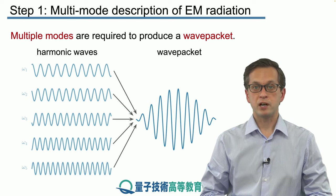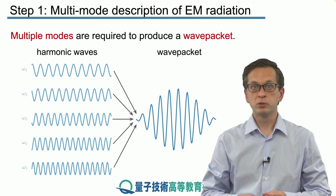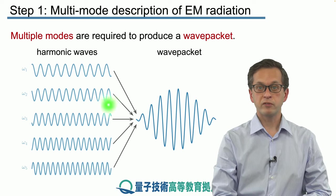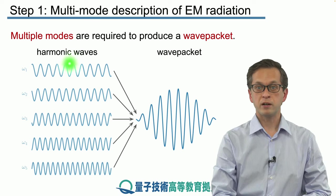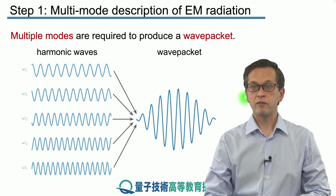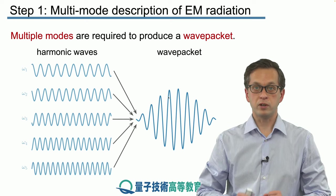We know from Fourier series how to do that. All we need is multiple modes of different frequencies that we superpose together and the resulting wave will have the shape of a wave packet.